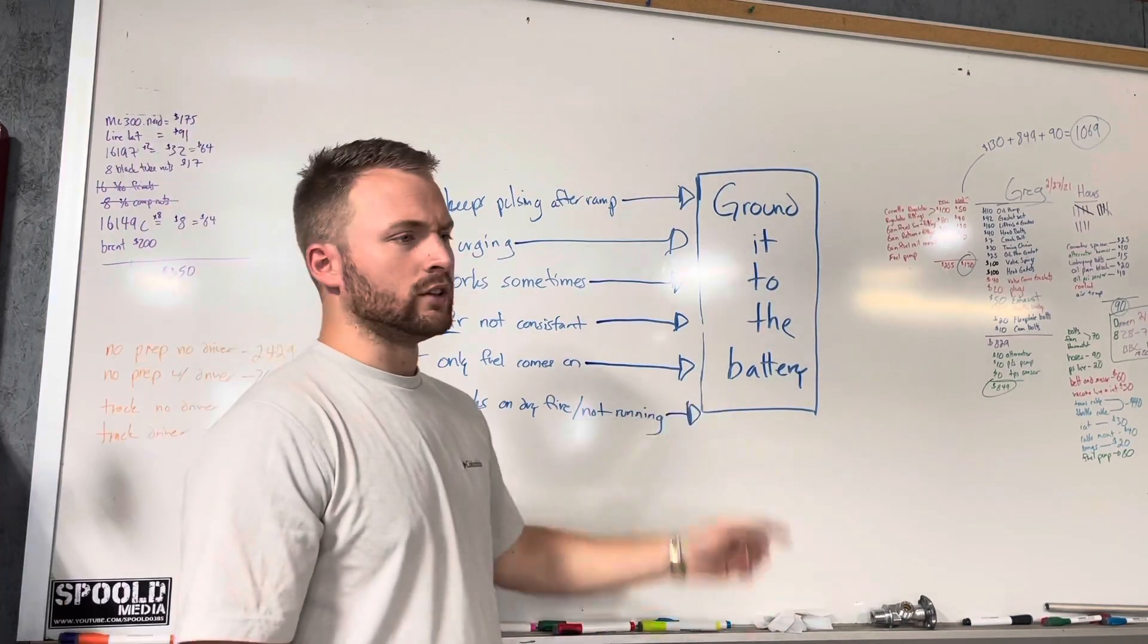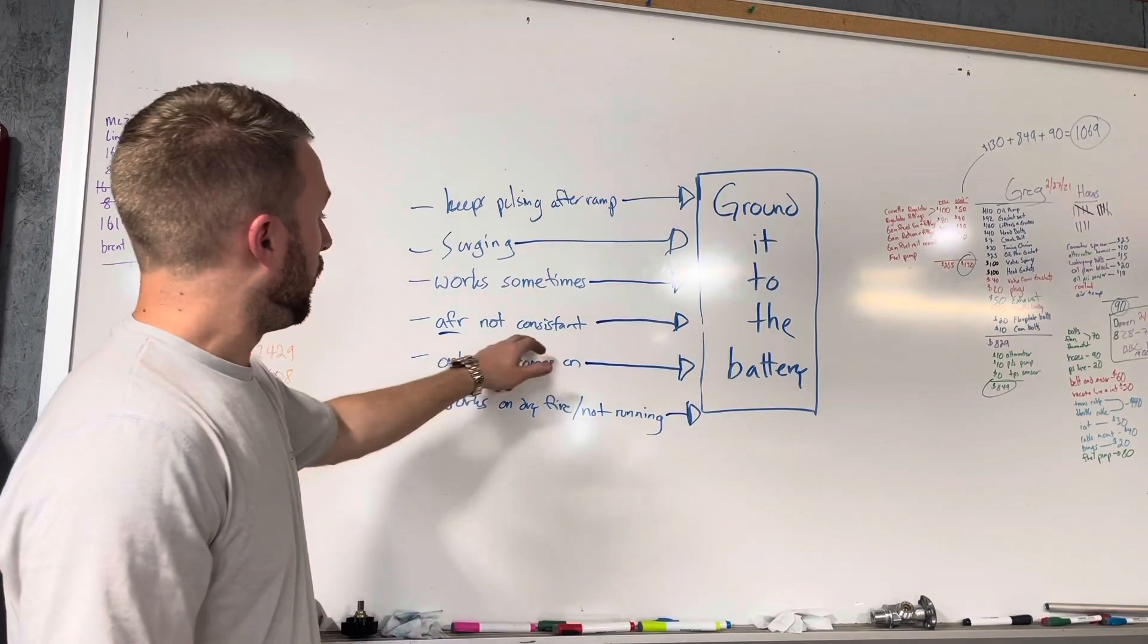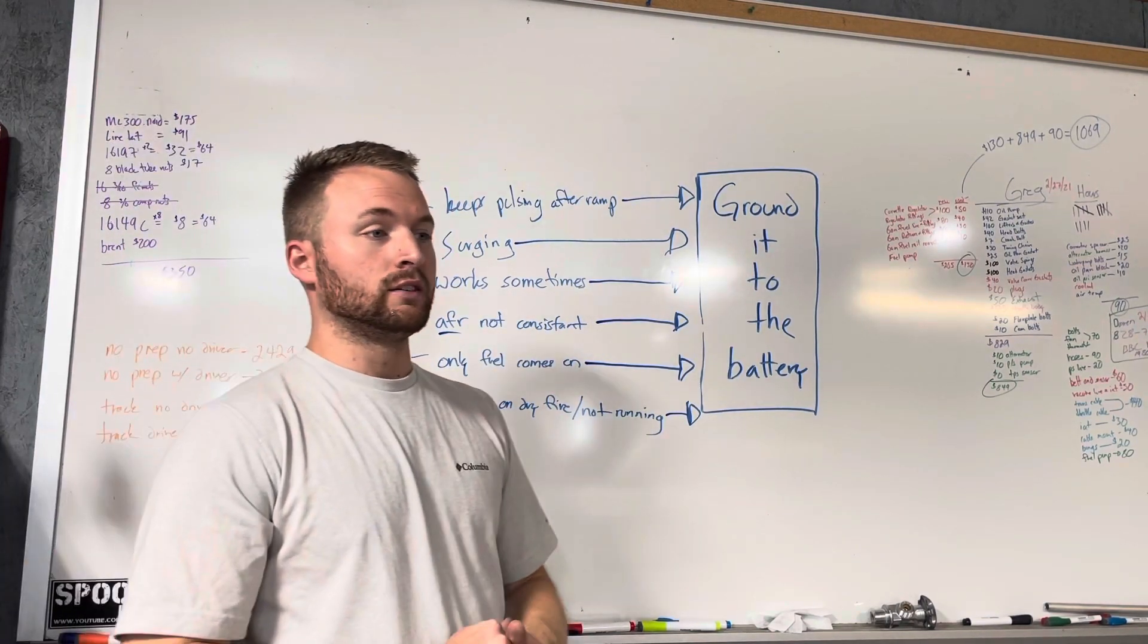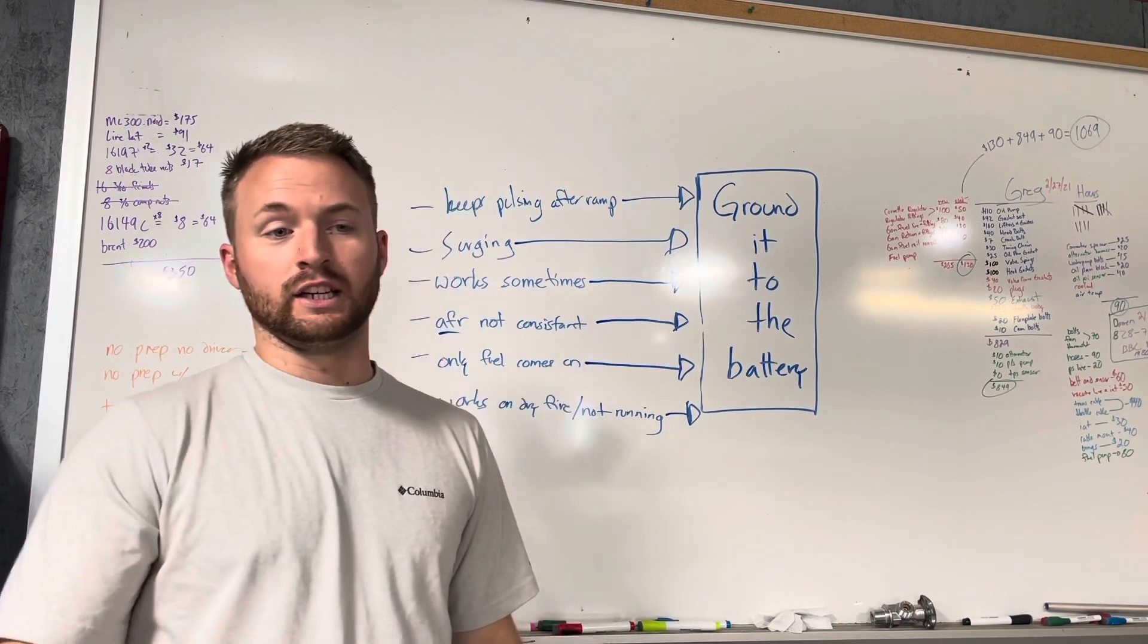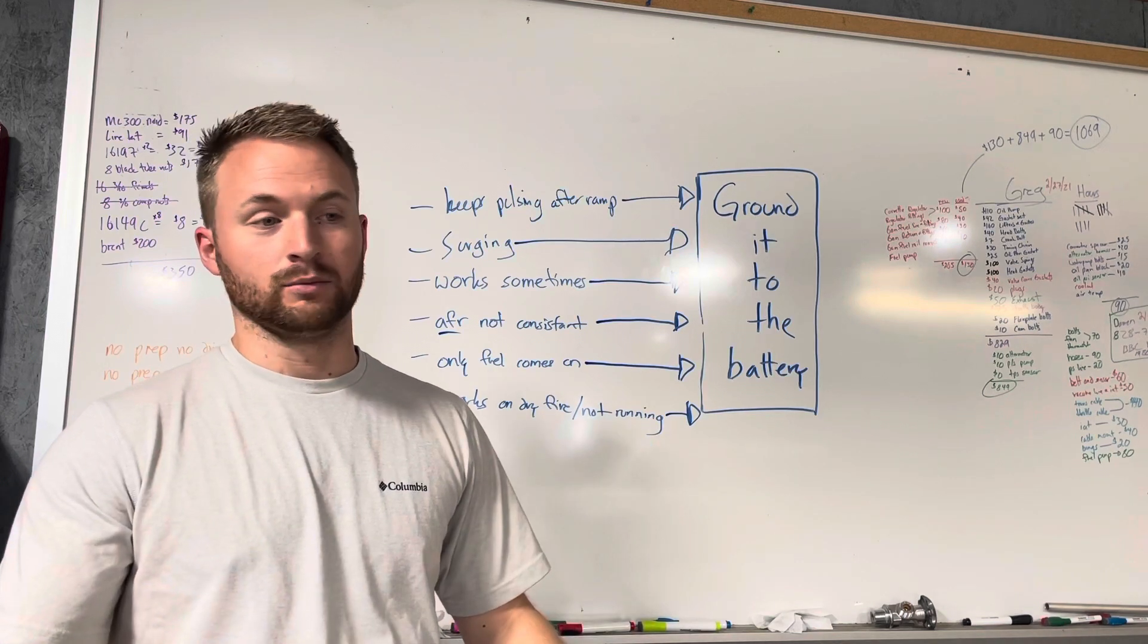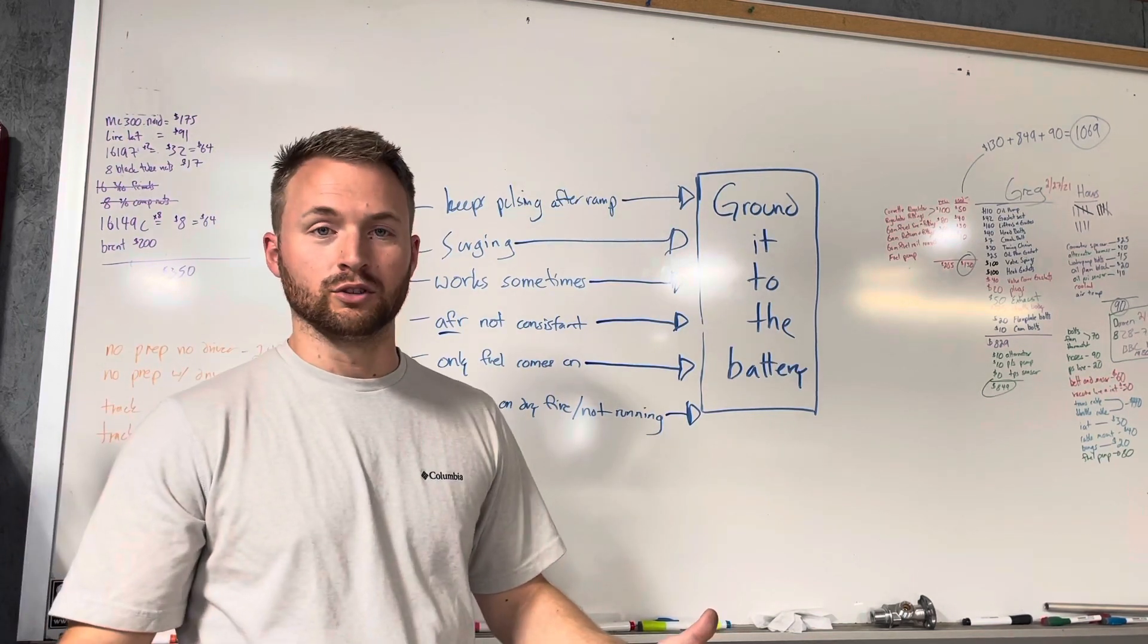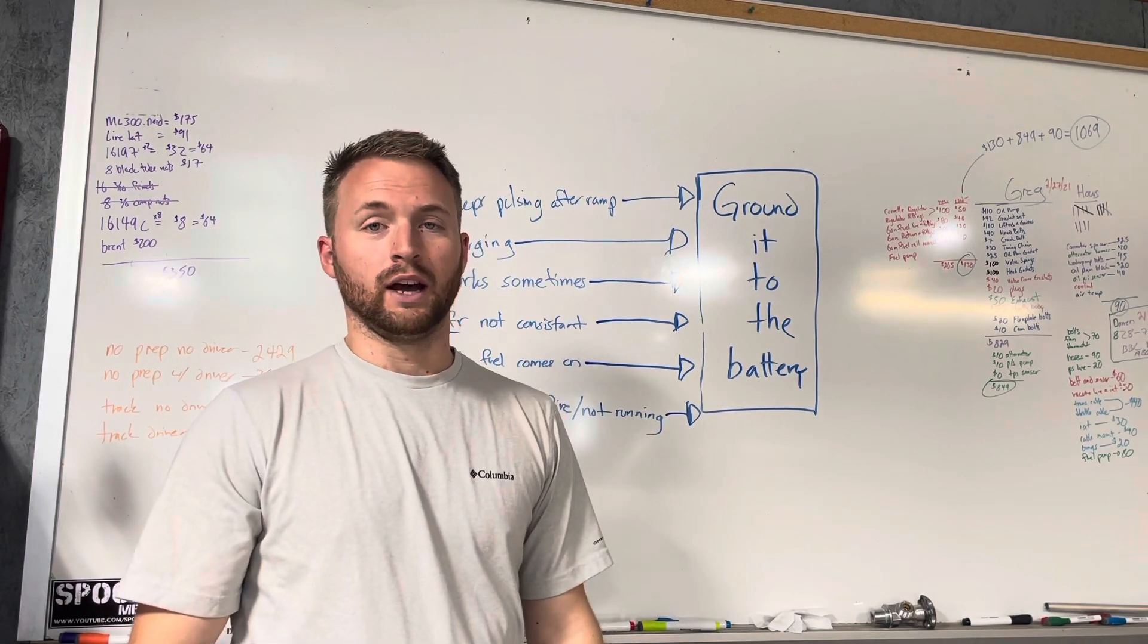If your AFRs are not consistent, if you hit it it's a 12.8 or 11.8 just like it should, and then at 330 feet it goes to a 13, or at the end of the ramp it goes to a 12.8 or 13 something, you can't figure out why in the world it's doing this, everything looks fine, you should make sure that it's grounded directly to the battery.